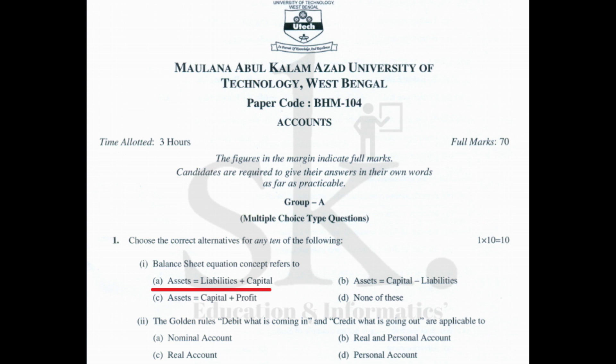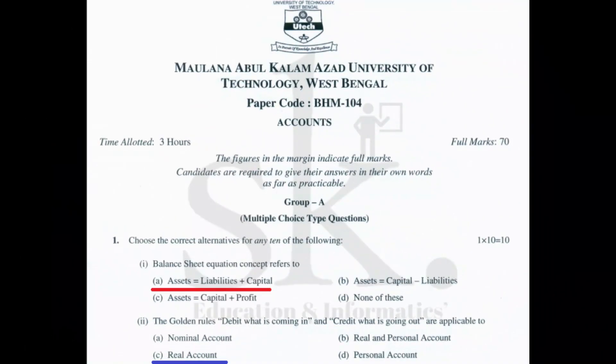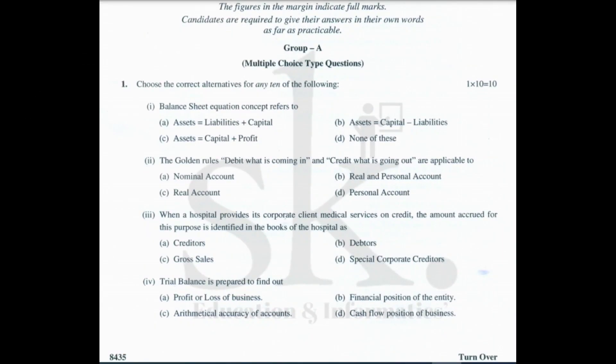Question number two: the golden rule 'debit what comes in and credit what goes out' is applicable to real account. The correct option is C.